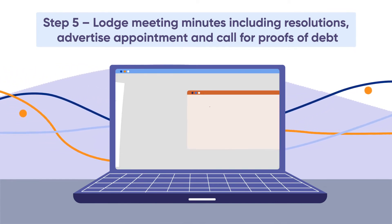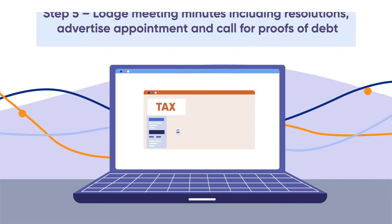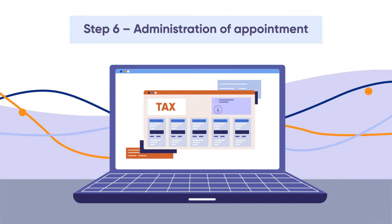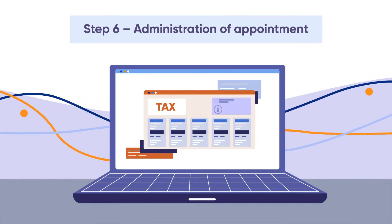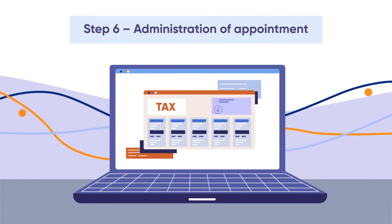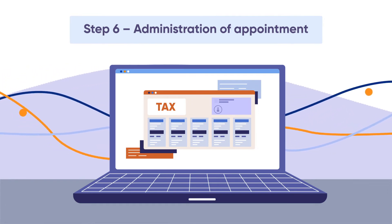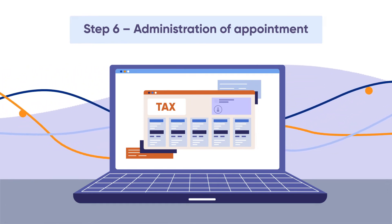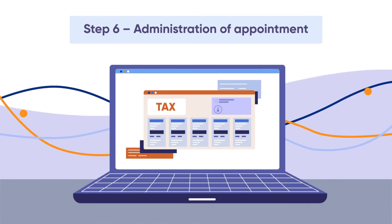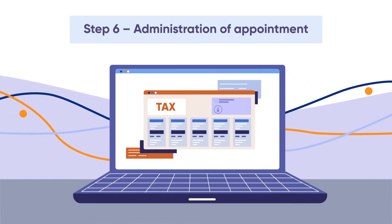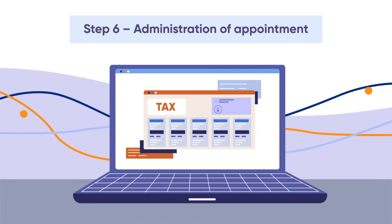Step 6: Administration of appointment. Finalise company accounts and lodge the final tax return, if they haven't been completed. Request tax clearance from the Australian Taxation Office. Pay any creditors. Distribute any surplus assets and/or capital back to the members.